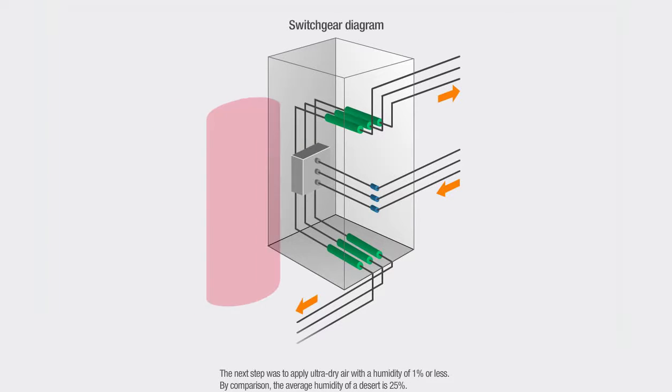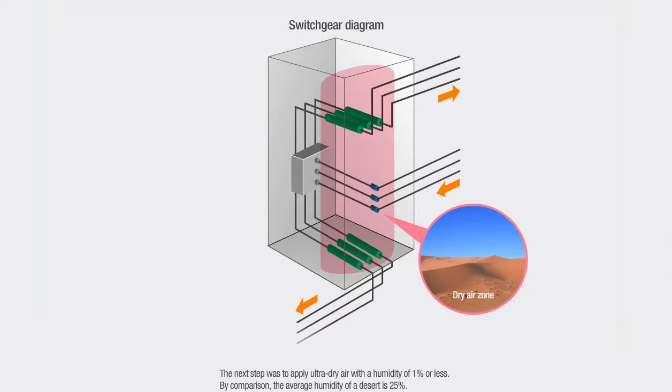The next step was to apply ultra-dry air with a humidity of 1% or less. By comparison, the average humidity of a desert is 25%.